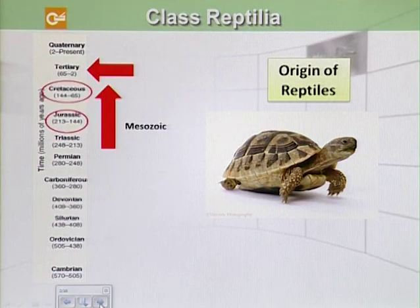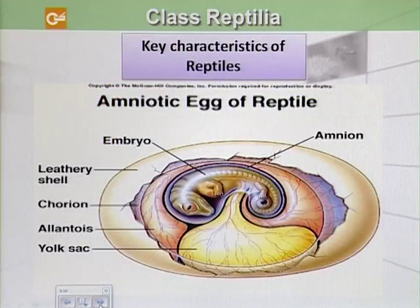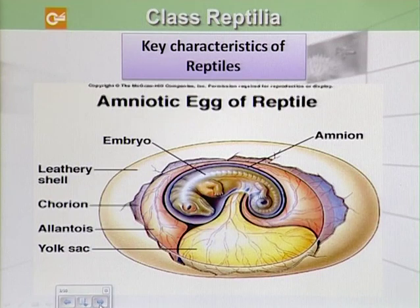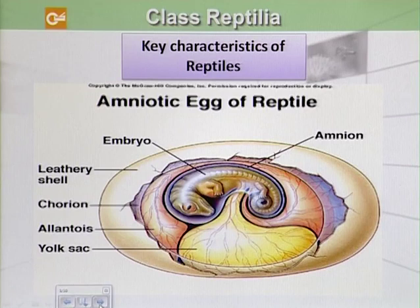The reptiles of today have actually derived from the dinosaurs of the Jurassic and Cretaceous periods. Now we will see some of the key characteristics of the reptiles, which they evolved to live more successfully on land. They have amniotic eggs, and we will see the whole structure of the amniotic egg.